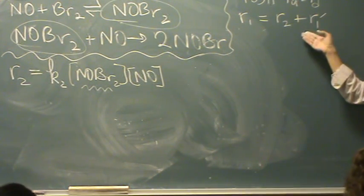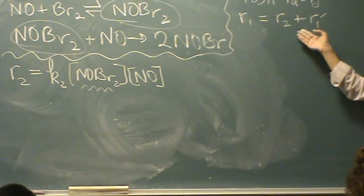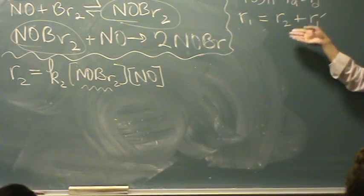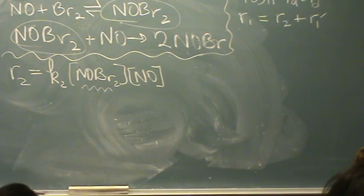And it turns out that this is a really common equation that PSSH gets you to. So you'll often see, it's not always, but often rate 1 will equal rate 2 plus rate 1 prime. When the problems get more complicated, that won't be true, but it's a common sort of PSSH equation that comes up.